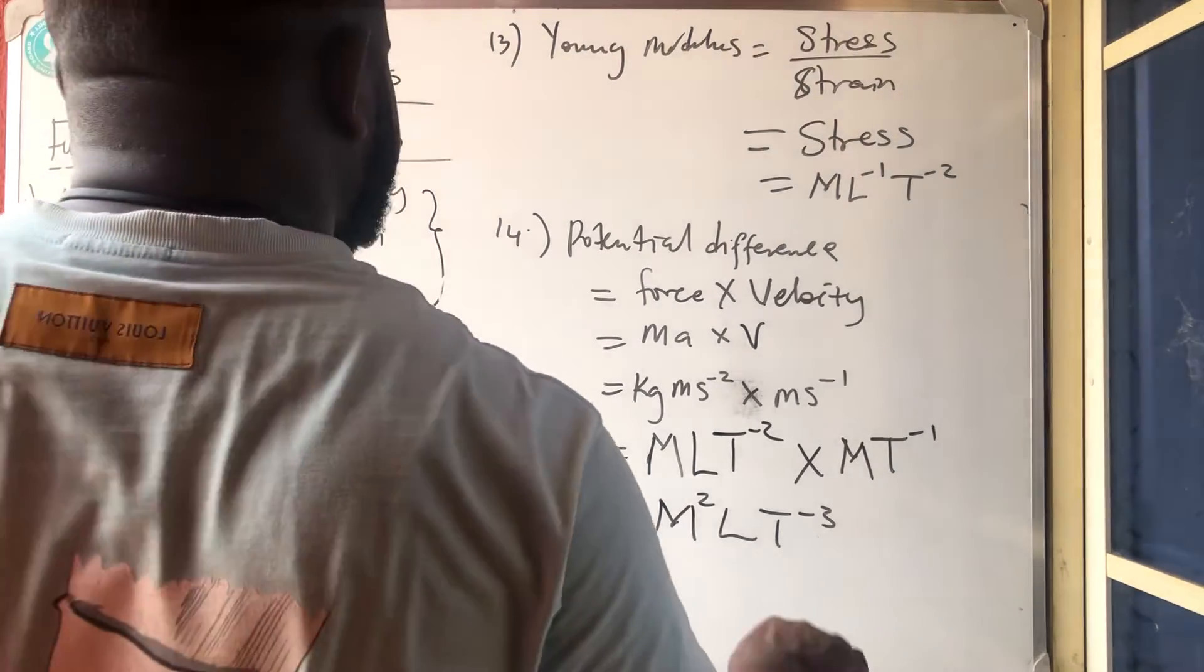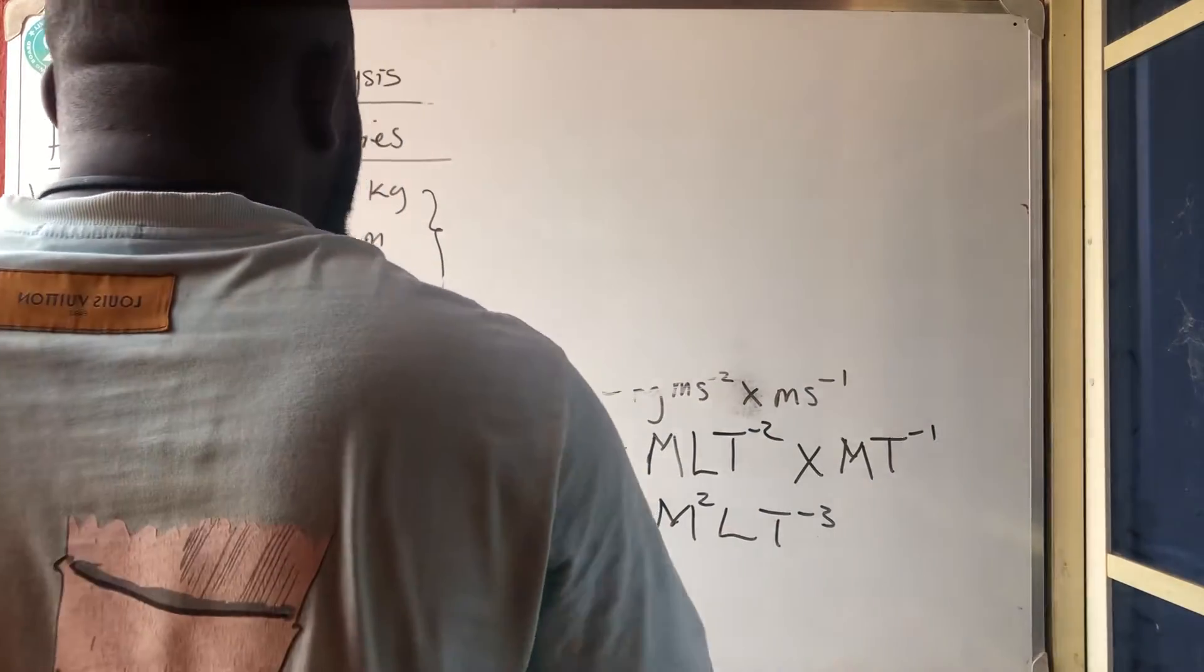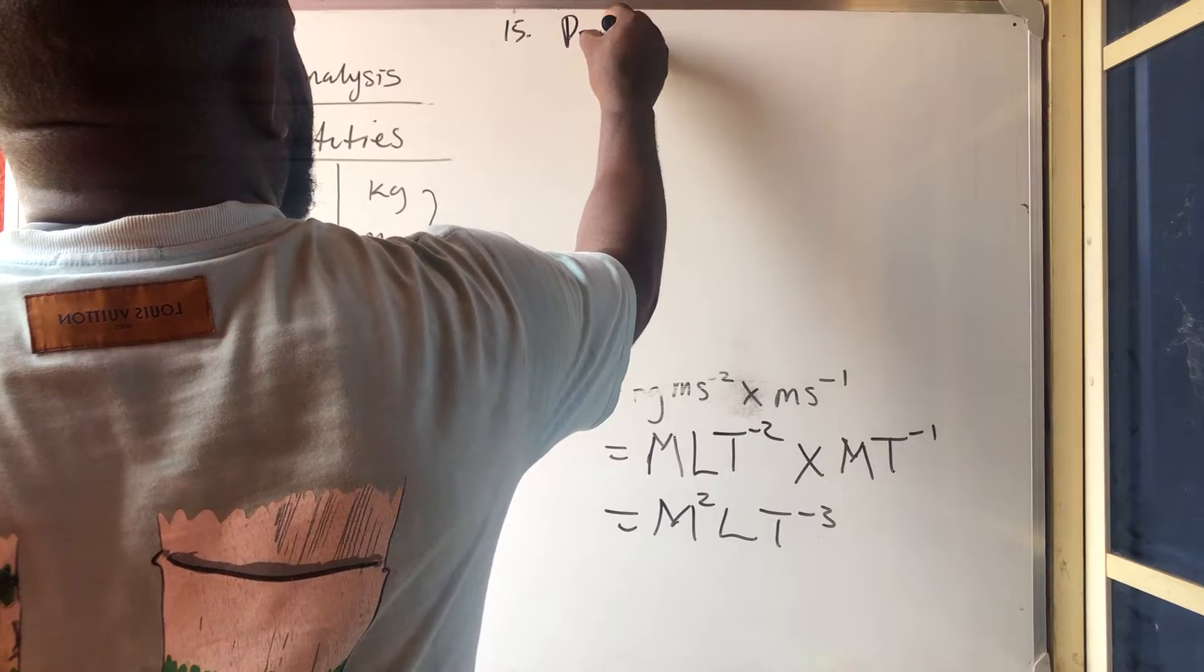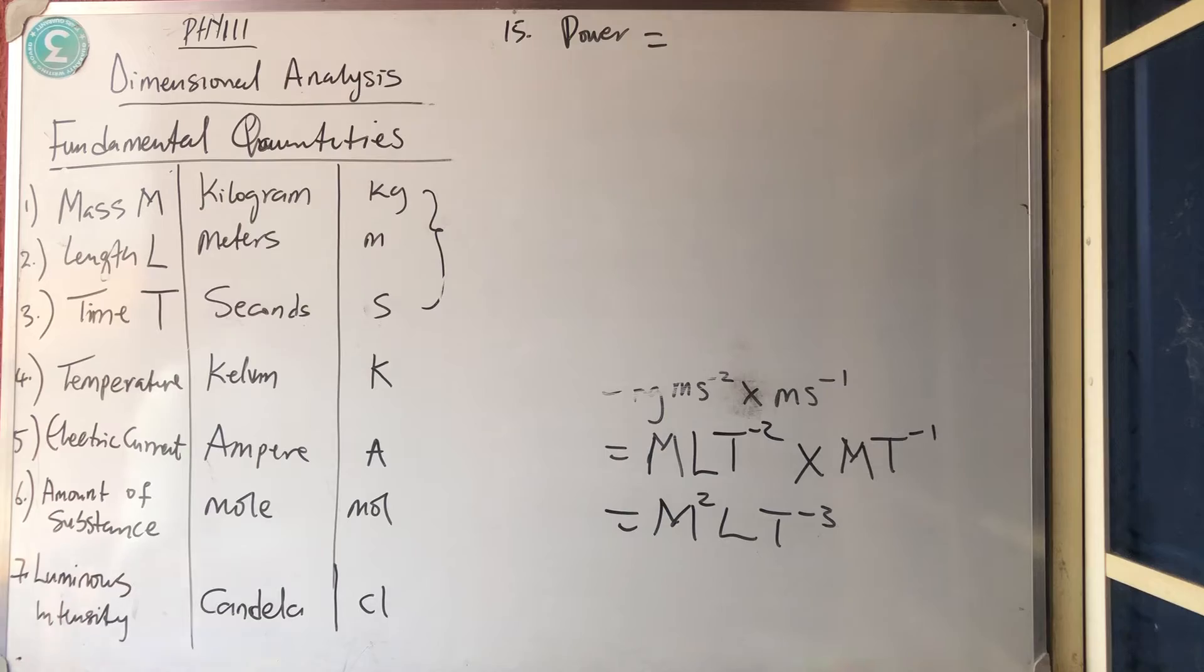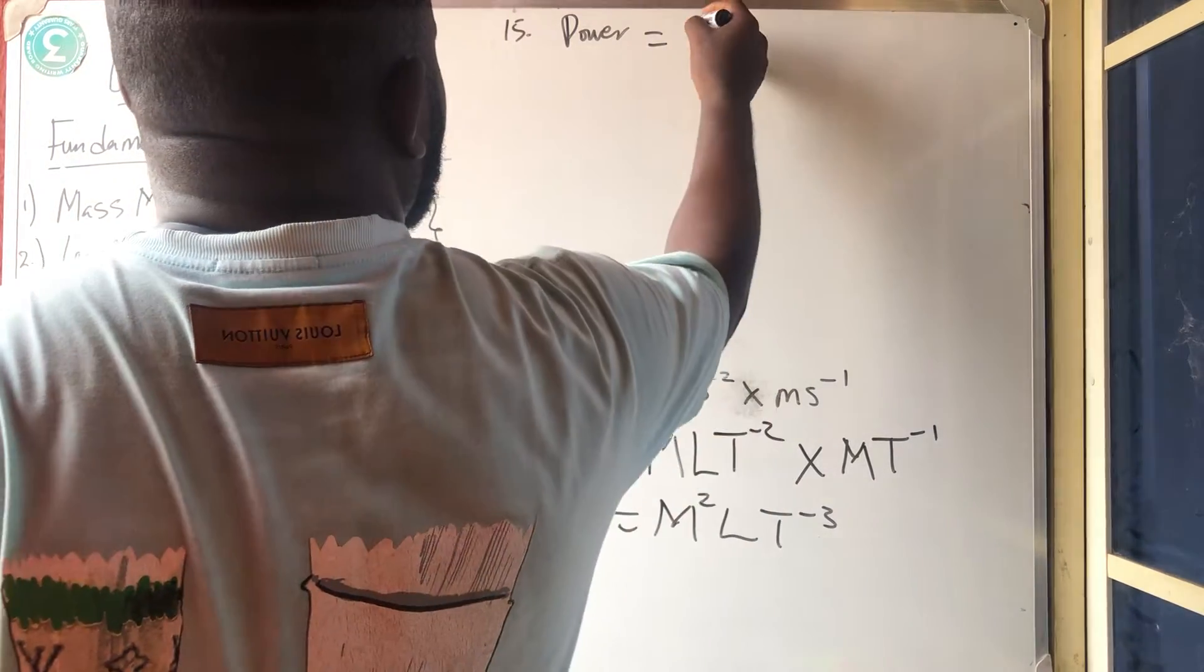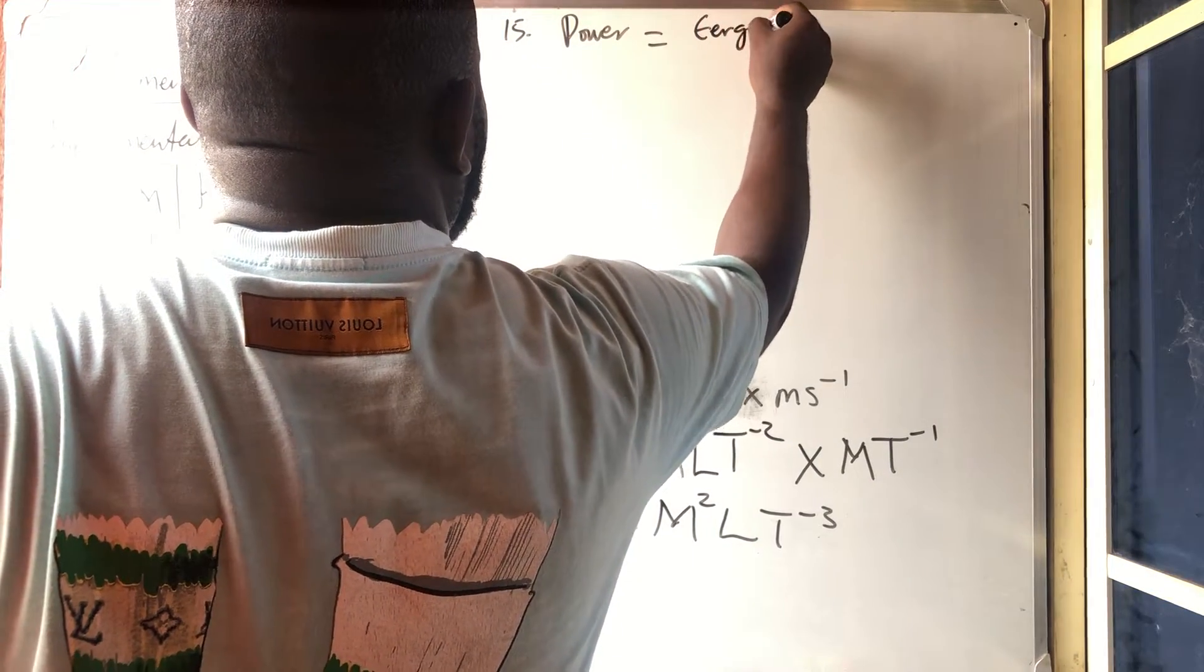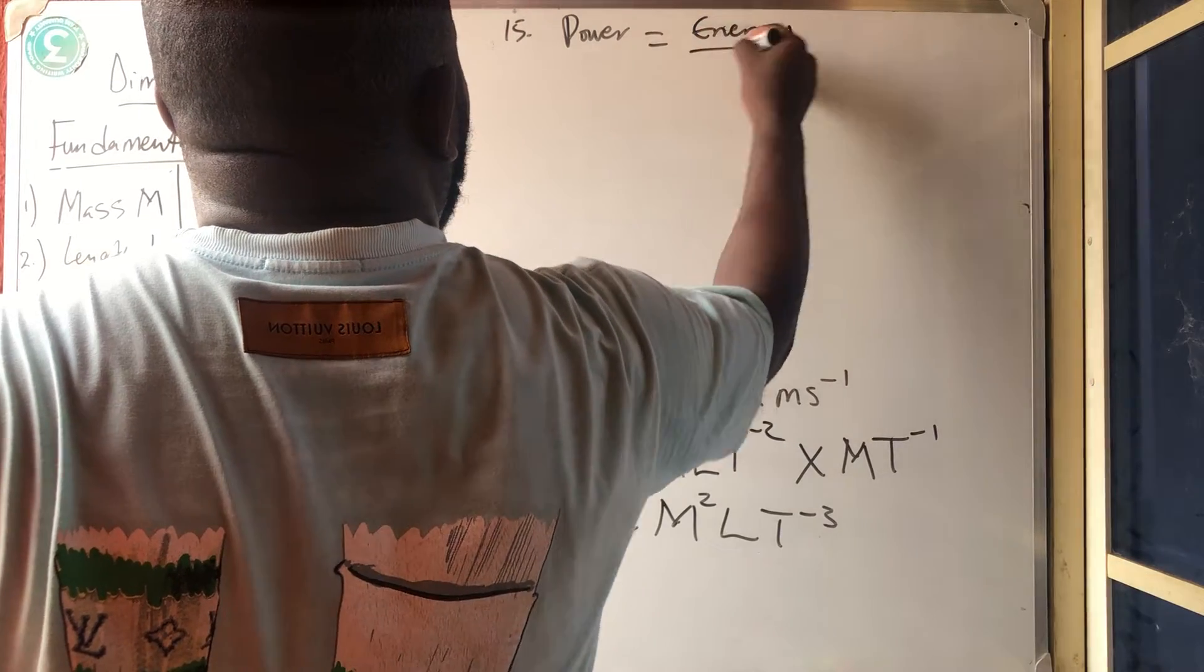Then number 15 is power. Number 15 is power. What's power? Power is an energy times time. Have we done energy? Energy. Energy over time. Energy over what? Over time.